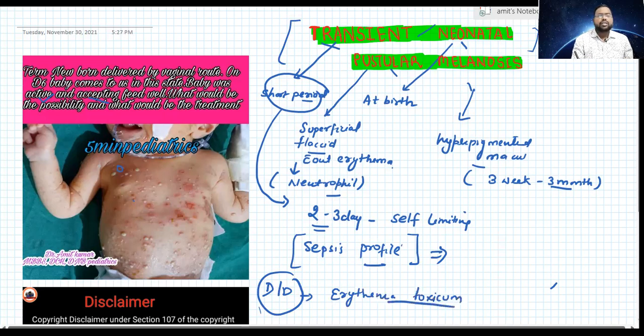So in this condition also, baby is active and playful and the baby has erythema. Here also baby has erythema that is present over face, over trunk and limb. And if we go for scraping here, we get eosinophils. This also disappears quickly. So these are the transient conditions and easily disappear. You do not have to worry. You have to assure mother that the condition is benign.